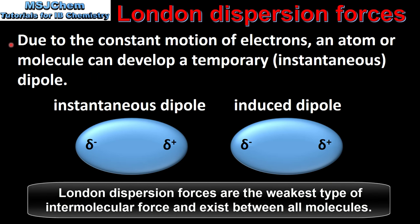Due to the constant motion of electrons, an atom or molecule can develop a temporary or instantaneous dipole. The molecule on the left has an instantaneous dipole. At a point in time all the electrons might be on one side of the atom or molecule, giving one side a temporary negative dipole. The other side of the molecule will therefore have a temporary positive dipole.